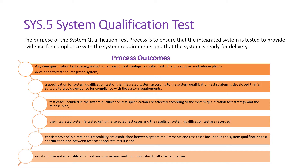Process outcomes: A system qualification test strategy including regression test strategy, consistent with the project plan and release plan, is developed. A specification for system qualification testing of the integrated system according to the strategy is developed, suitable to provide evidence for compliance with the system requirements. Test cases are selected according to the strategy and release plan. The integrated system is tested using the selected test cases and results are recorded. Consistency and bidirectional traceability are established between system requirements and test cases in the specification, and between test cases and test results.